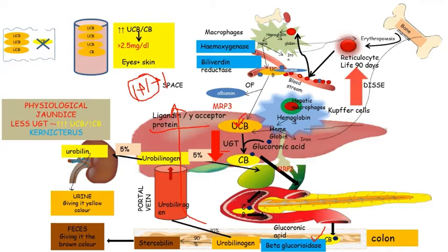With time, the liver will mature, glucuronyl transferase will be secreted adequately, ligandins will function properly, and the reticulocyte lifespan will increase. So all these factors will be reduced and the jaundice will resolve on its own.